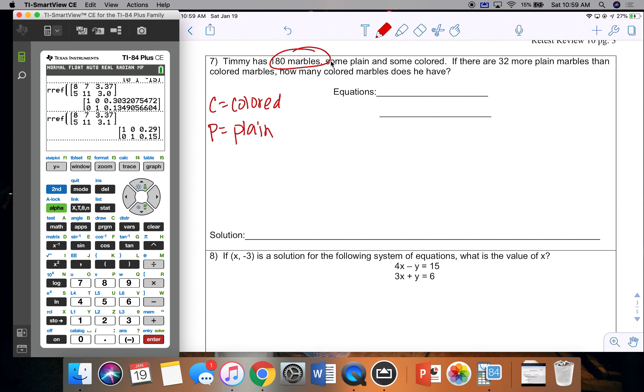So if Timmy has 180 marbles, that's going to be a total, he has 180 total. So there are some colored and some plain. Now we don't know how many of each, which is why we have variables. So we write some colored C and some plain P, and that totals to equal 180. Then there are 32 more plain than colored. So there are more plain. So we're going to put plain equals 32 more than, which means plus colored.